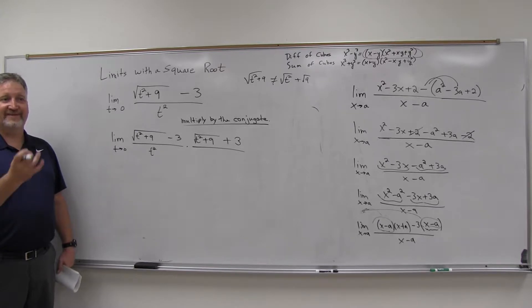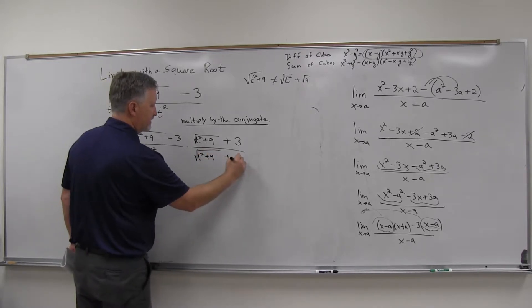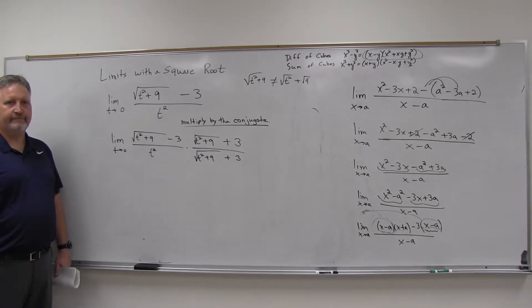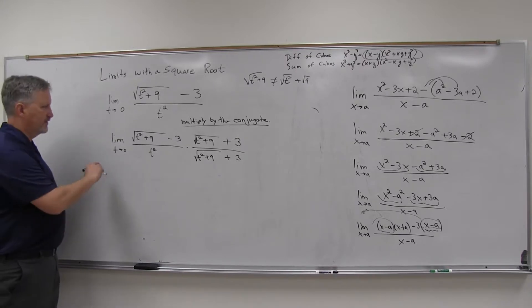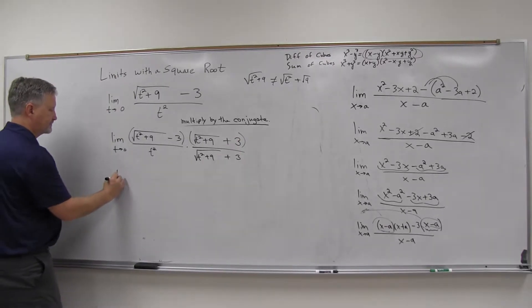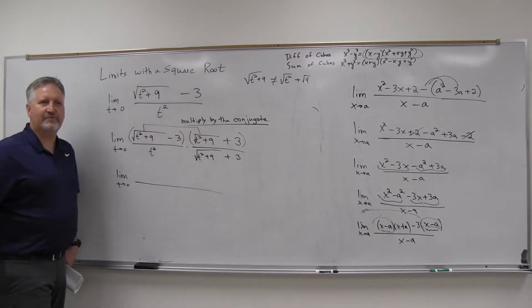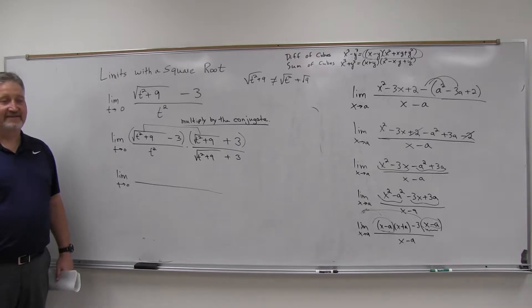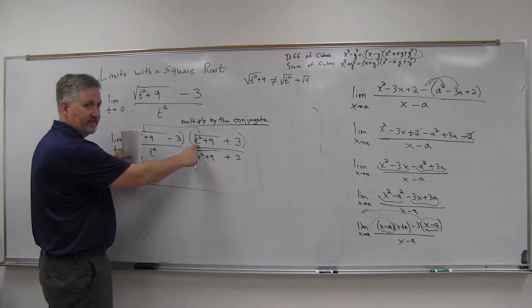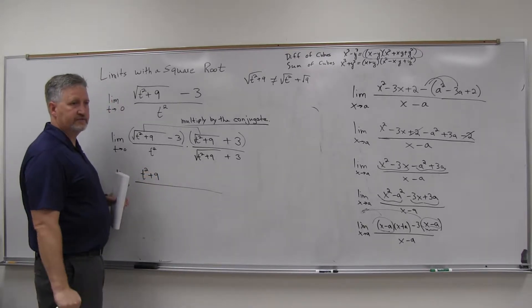Now if I do that on top, I've got to do that on the bottom as well — multiply by the square root of t squared plus nine plus three on the bottom too, because that's multiplying by one; it doesn't change its value. If I go ahead and FOIL that top out, t squared plus nine times t squared plus nine — the square roots cancel each other. This times this just gives me t squared plus nine.